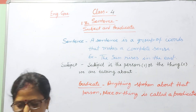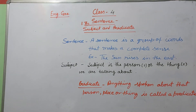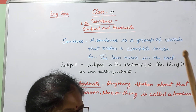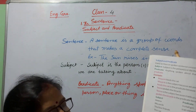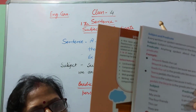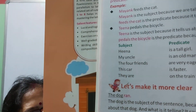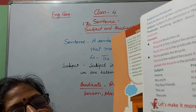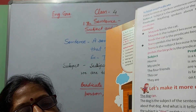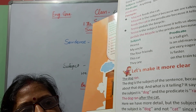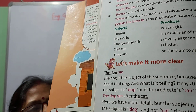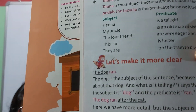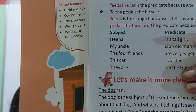How do you identify the subject? Ask who or what. For example, 'the dog' — who is the dog? The dog is the subject. The subject is the main part, and the remaining part is the predicate.